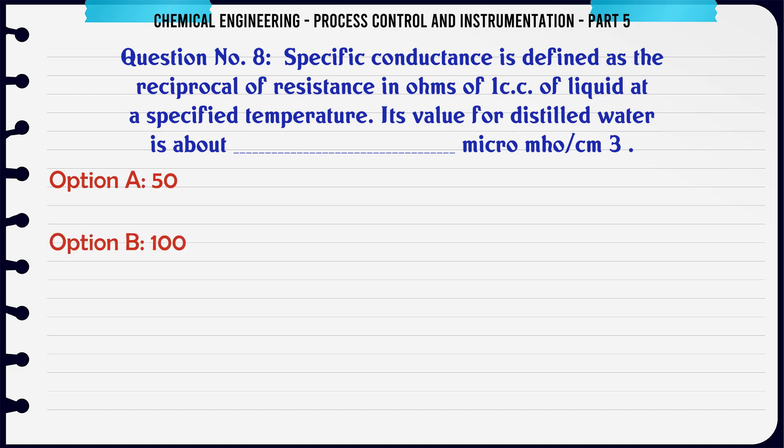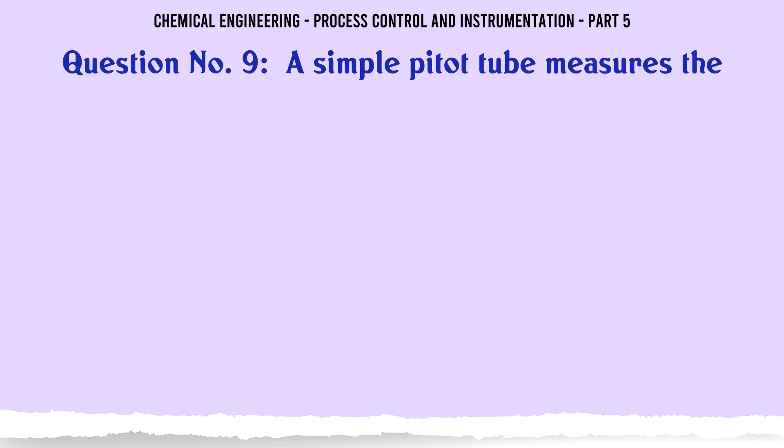The reciprocal of resistance in ohms of 1 cc of liquid at a specified temperature. Its value for distilled water is about micro-mho per cm³. A. 50. B. 100. C. 10. D. 1. The correct answer is 1.